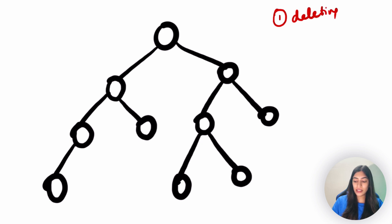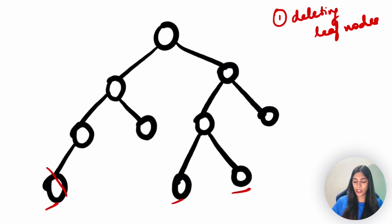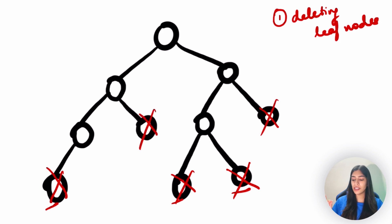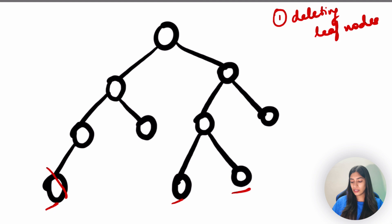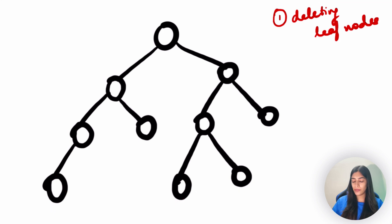When we are deleting leaf nodes, this is very easy because they don't have any children. All we have to do is just delete them as they are. You could be deleting any leaf node - there's no impact on the rest of the tree. We just have to detach it from the tree, clear the value, and we are done.